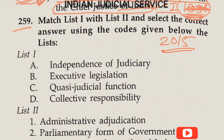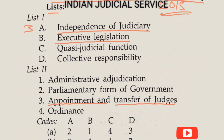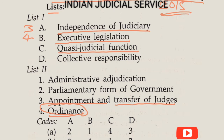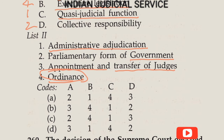Question number 259: Match List 1 with List 2. Independence of judiciary relates to appointment and transfer of judges — so A matches 3. Executive legislation is the ordinance — so B matches 4. Quasi-judicial function is administrative adjudication — so C matches 1. Collective responsibility relates to parliamentary form of government — so D matches 2. The answer is 3, 4, 1, 2 — Option B.